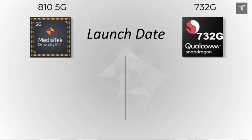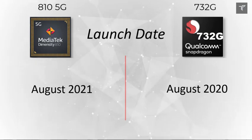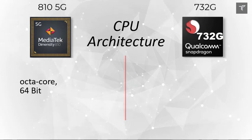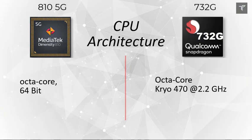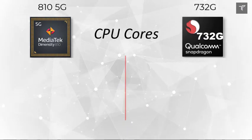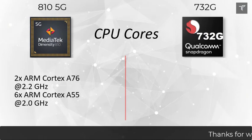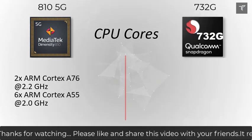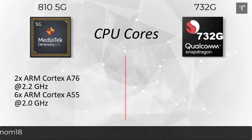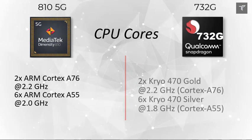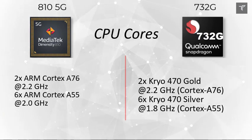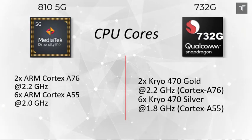Starting off with the launch date, the Snapdragon 732G processor is almost exactly a year older than the Dimensity 810. The CPU architecture of the Dimensity 810 is octa-core, and the 732G is also octa-core with Kryo 470 at 2.2 GHz. The Dimensity 810 features two cores of ARM Cortex-A76 at 2.2 GHz and six cores of Cortex-A55 at 2.0 GHz, while the Snapdragon has two cores of Kryo 470 Gold and six cores of Kryo 470 Silver. This round goes to the MediaTek Dimensity.